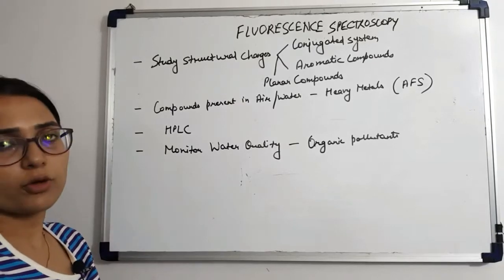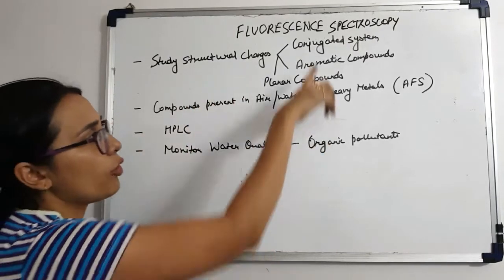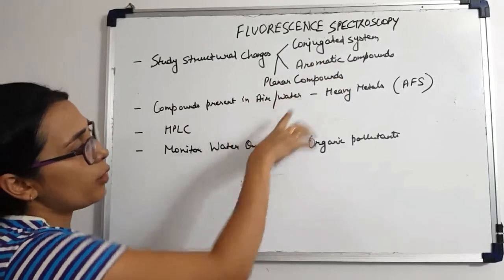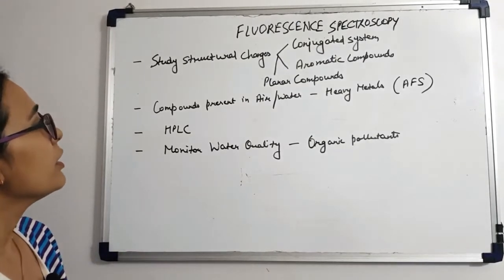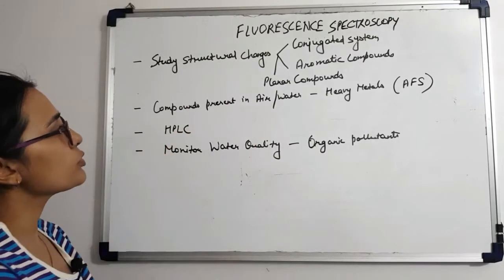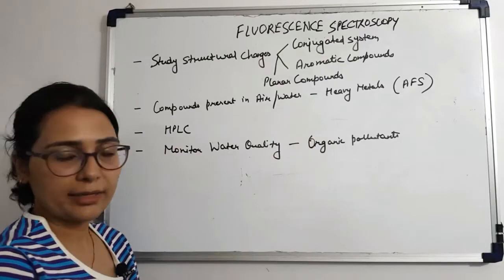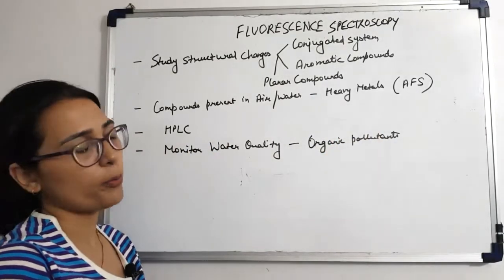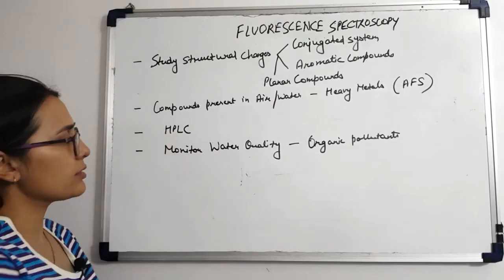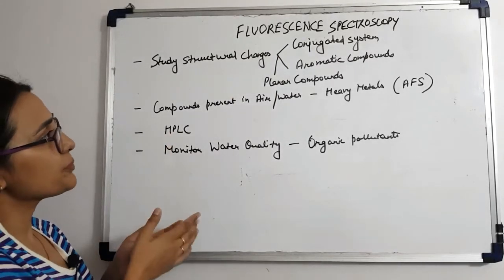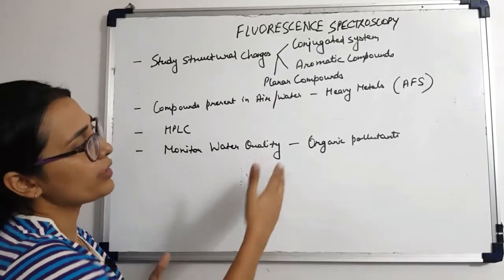Now let's look at some applications of fluorescence spectroscopy. It is routinely used to study structural changes in conjugated systems, aromatic compounds, and rigid planar compounds — changes that occur due to alteration in temperature, pH, ionic strength, solvents, or ligands. It is also used to detect various compounds in air or water, for example detecting heavy metals in water like mercury, using atomic fluorescence spectroscopy techniques. In analytical chemistry, fluorescence detectors are used in HPLC. Fluorescence spectroscopy can also monitor water quality by detecting the presence or levels of organic pollutants in water.